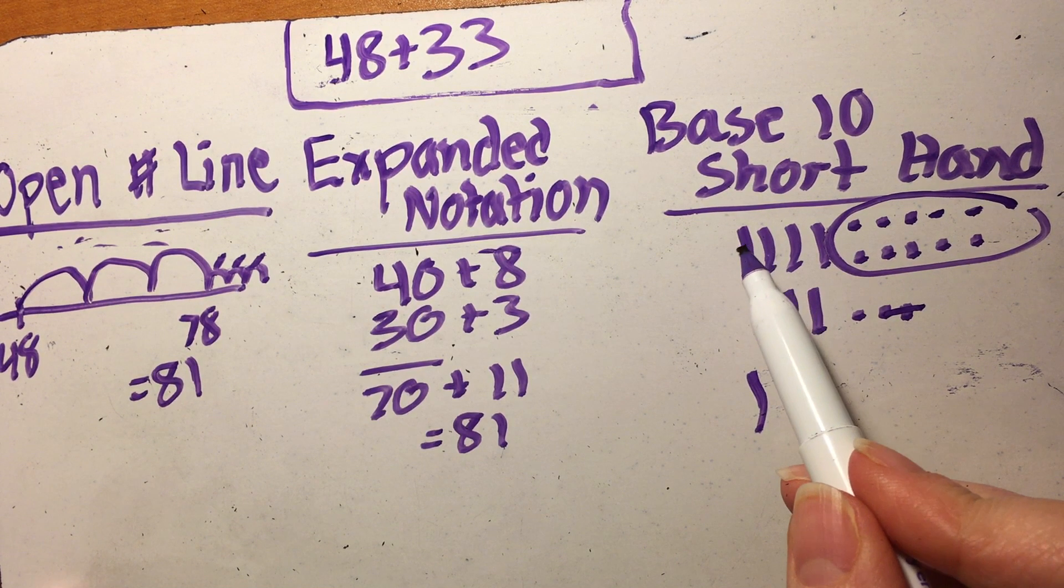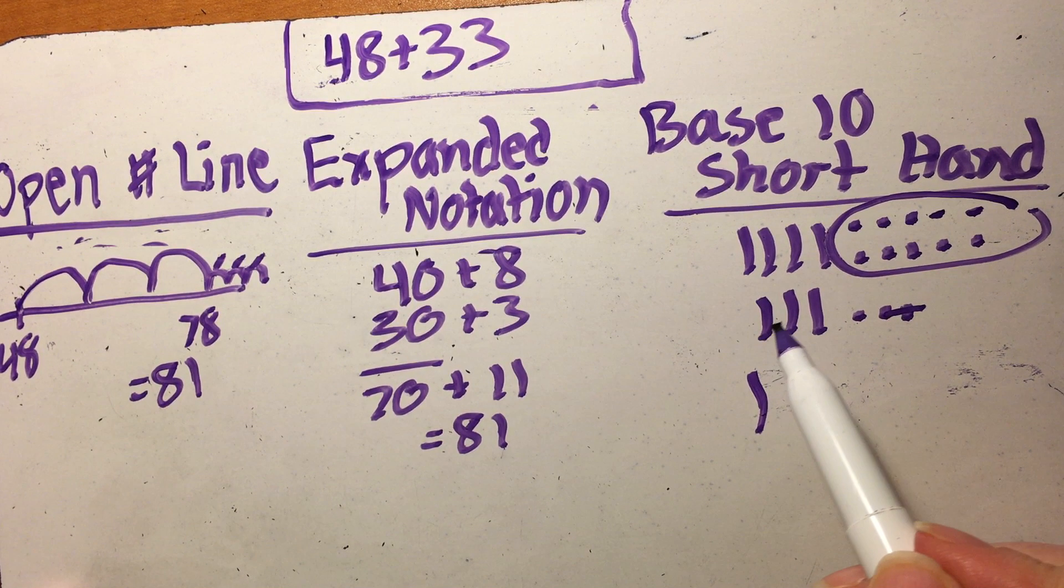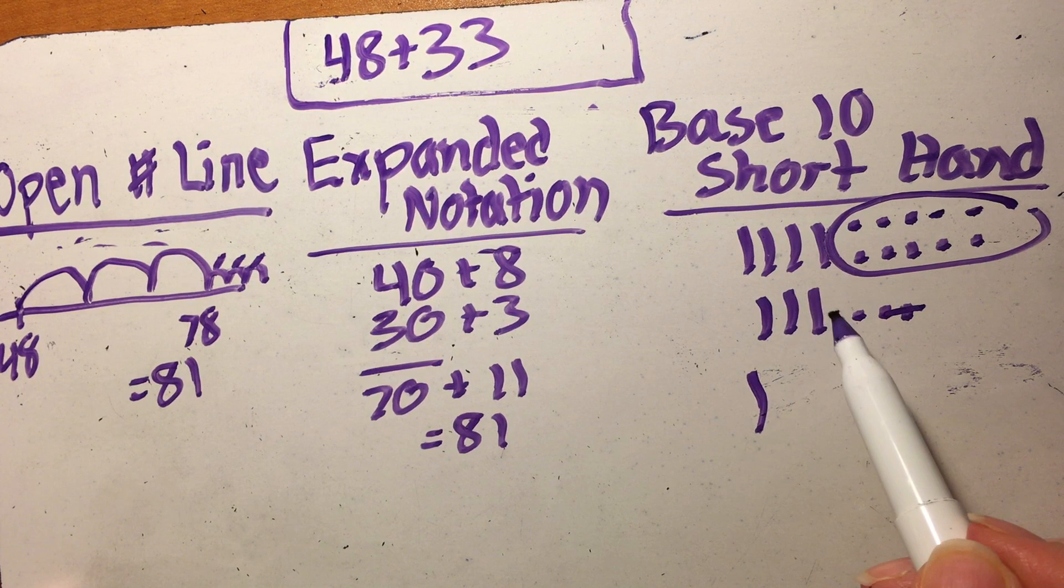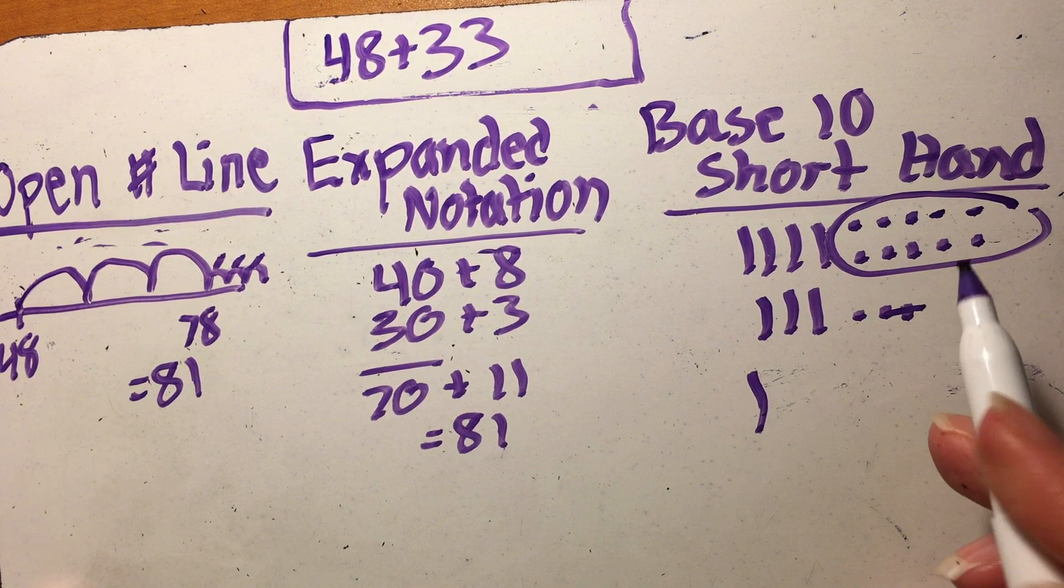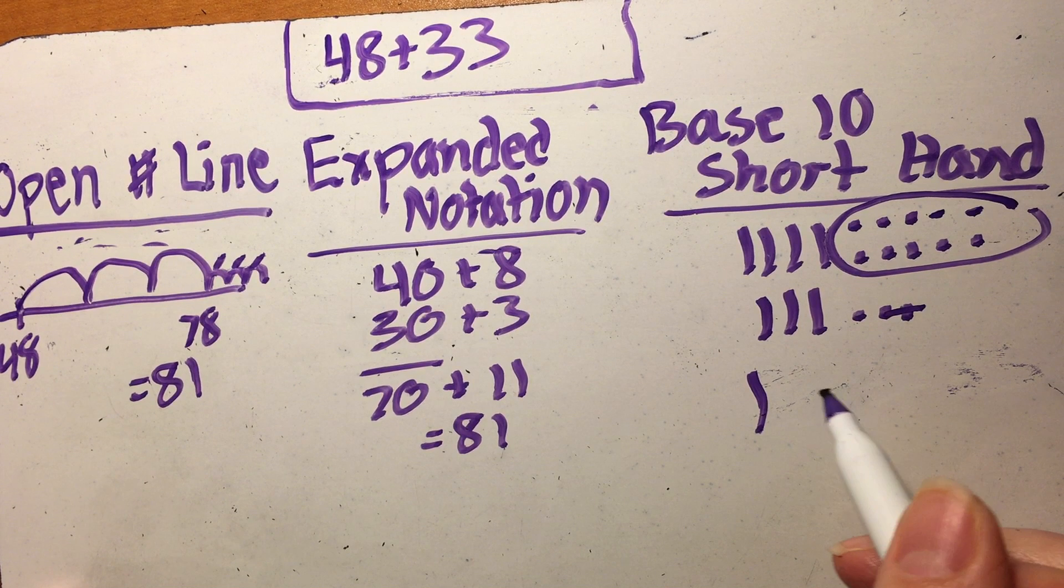So now I'm counting those tens that I made, so I've got 40, 50, 60, 70, 80, and then I've got the 81 left over.